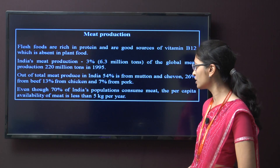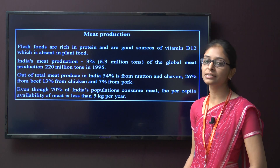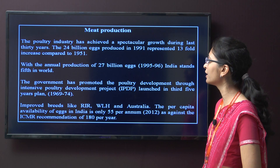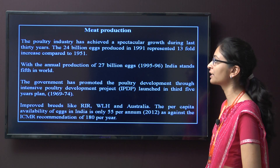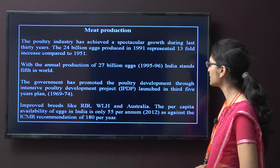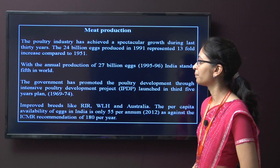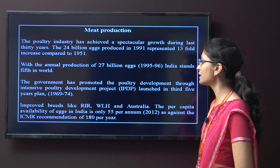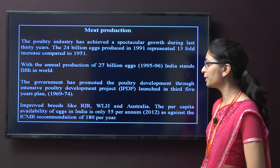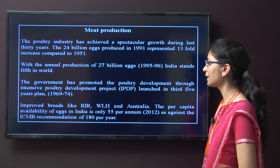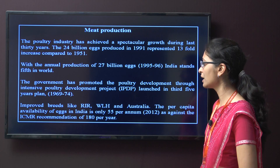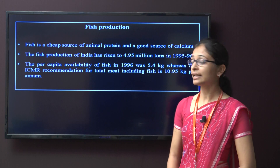Even though 70 percent of India's population consume meat, the per capita availability is only less than 5 kg per year. The poultry industry has achieved spectacular growth during the last 30 years. The 24 billion eggs produced in 1991 represented a 30-fold increase compared to 1951. With annual production of 27 billion eggs in 1995-96, India stands fifth in the world. The government promoted poultry development through the intensive poultry development project launched during 1969–1974. The per capita availability of egg in India is only 55 per annum in 2012, against the ICMR recommendation of about 180 per year.